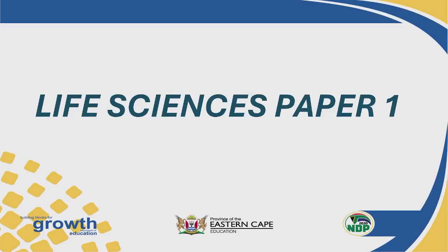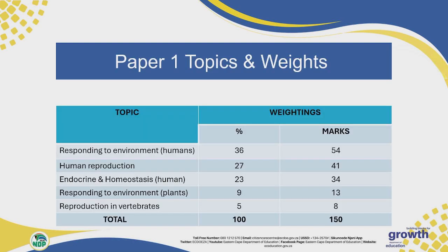Let's have a look at the topics and weightings in Paper 1. There are five topics. The first topic, responding to the environment in humans, counts 54 marks of the paper, which is 36% of the paper and is the most important topic if you're wanting to score marks.